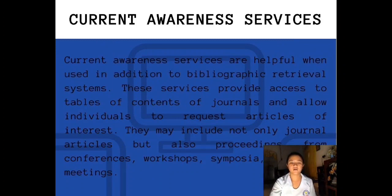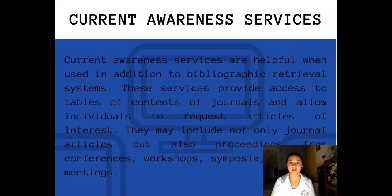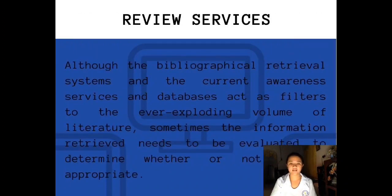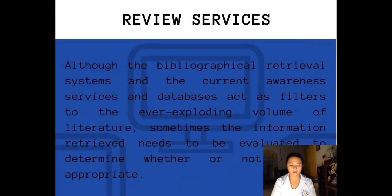Current Awareness Services. Current Awareness Services are helpful when used in addition to bibliographic retrieval systems. These services provide access to tables of contents of journals and allow individuals to request articles of interest. They may include not only journal articles but also proceedings from conferences, workshops, symposia, and other meetings. Review Services — although bibliographic retrieval systems and current awareness services act as filters to the ever-expanding volume of literature, sometimes the information retrieved needs to be evaluated to determine whether or not it is appropriate.